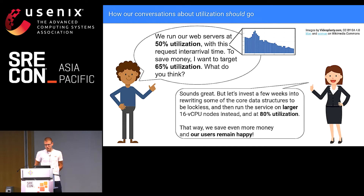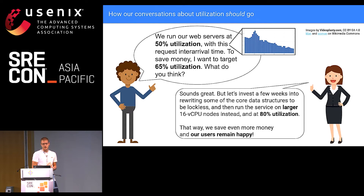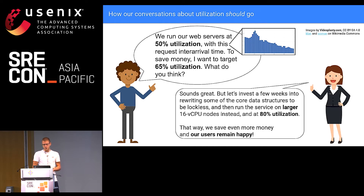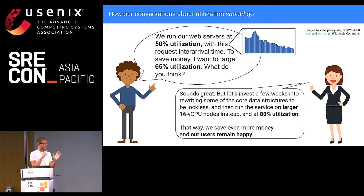In conclusion, when we talk about utilization, we should be more data-driven. Here's how I would imagine the conversation: Joe says we run our web service at 50% utilization with this request inter-arrival time — but instead of citing averages, he points to an actual graph. To save money, I want to target 65% utilization — what do you think? And Jane says: that sounds great, but let's invest a few weeks rewriting core data structures to be lockless, then run the service on larger 16 virtual CPU nodes at 80% utilization. That way we save even more money and customers remain happy. In essence, you can trade these two things off, but you can also just make your servers larger — make fewer of them, make them larger, more traffic per instance.